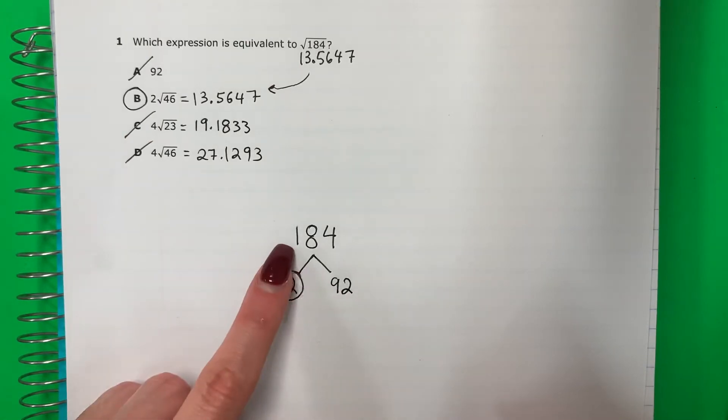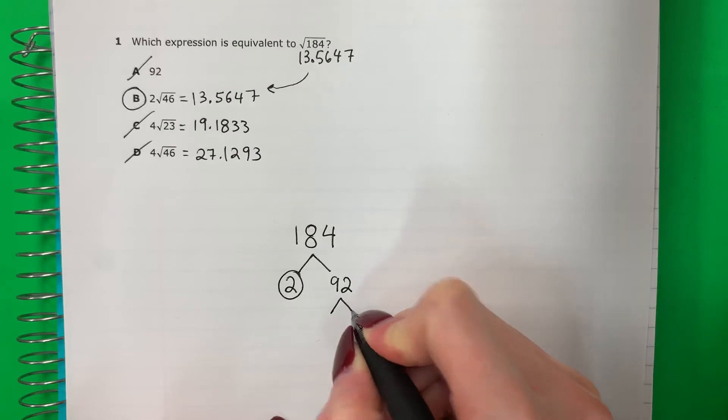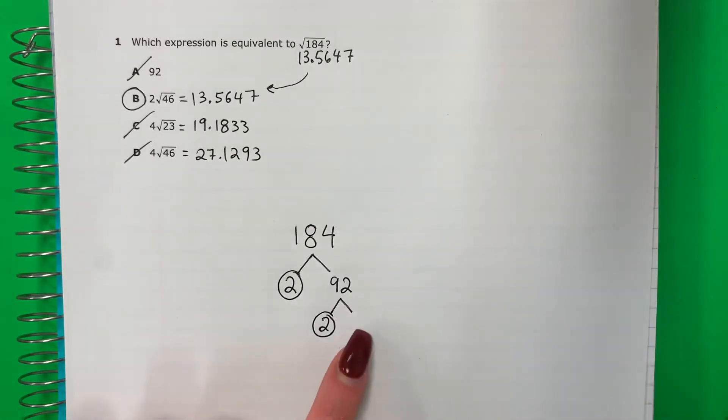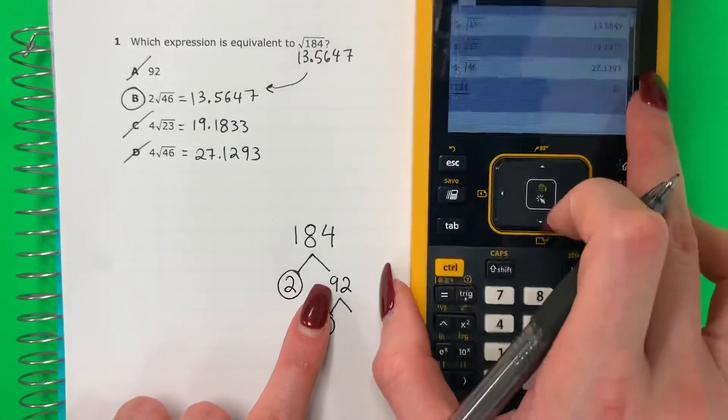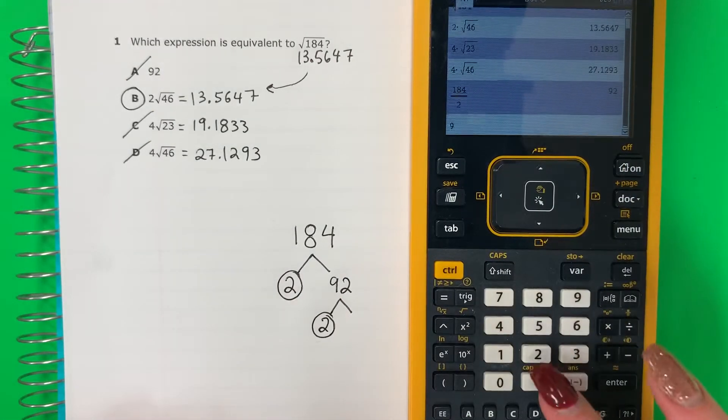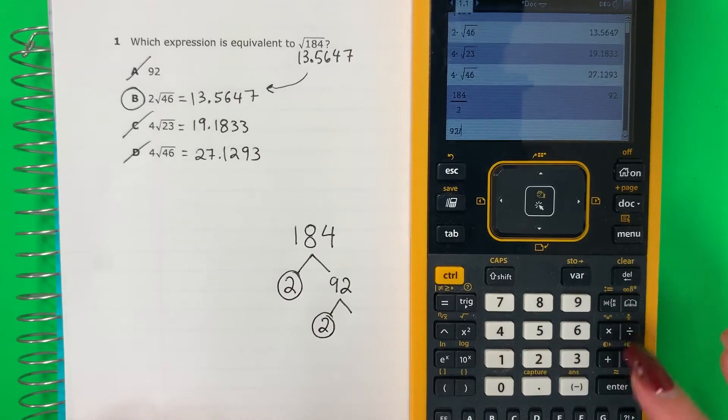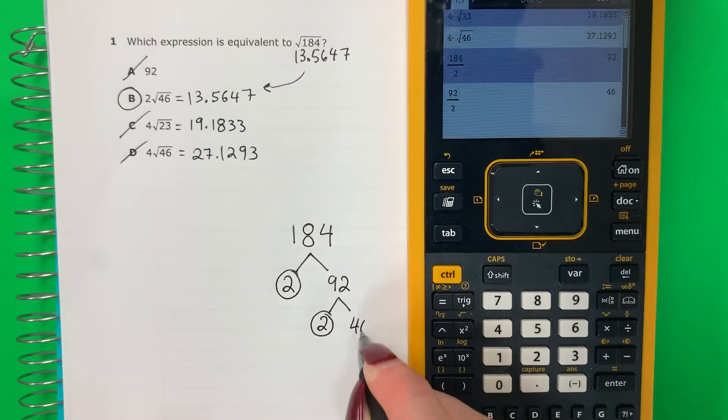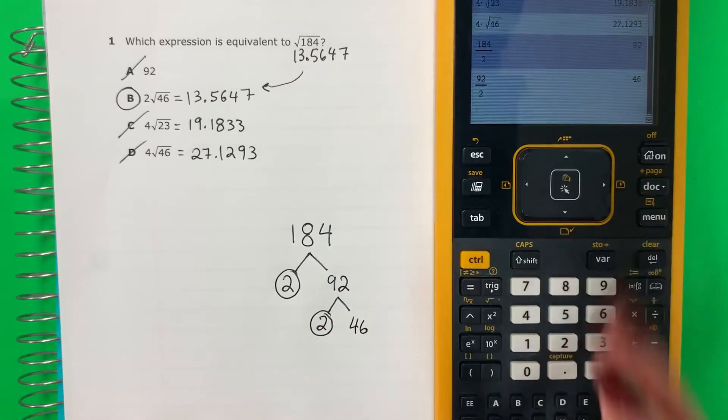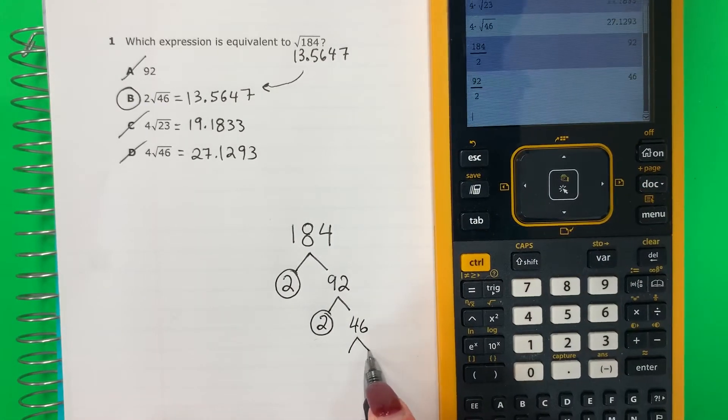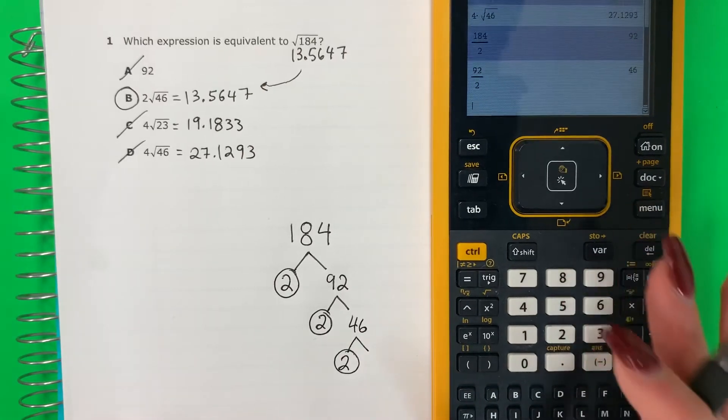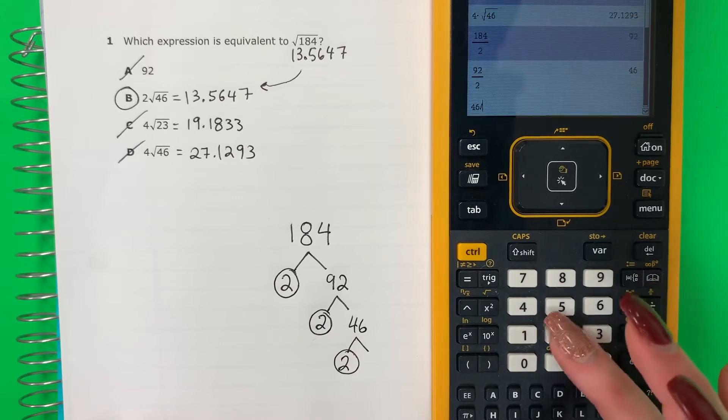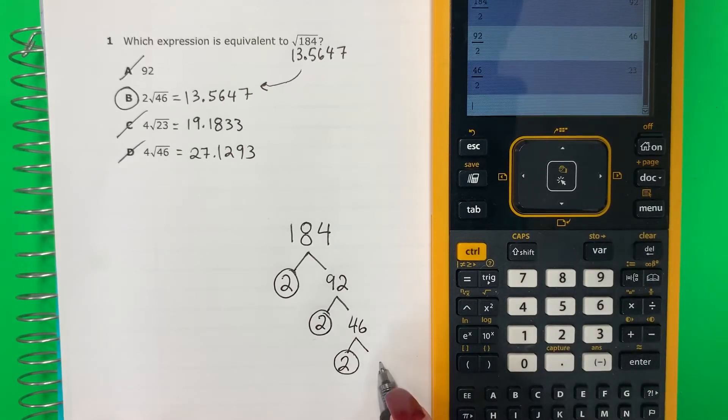I can continue. Puedo continuar. So 92, let's do 2 times 2 por what number? So again, I will do 92 divided by 2, 92 entre 2, 46. Let's continue with 46. Let me do 2 again. Dos otra vez. 46 divided by 2, 23.